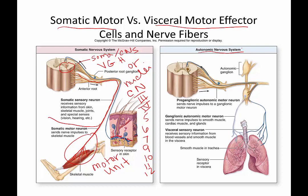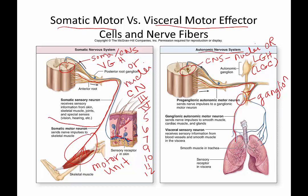In contrast, the autonomic nervous system deals with a two-neuron chain. The first cell body will always be found in the CNS, either in nuclei or in a lateral gray horn — sometimes called lateral gray column — in the spinal cord. The second neuronal cell body is always found in a ganglion. The first fiber terminates on the second cell body, always. The second fiber terminates on involuntary effectors: smooth muscle, cardiac muscle, glands, and in a special case, adipose tissue.